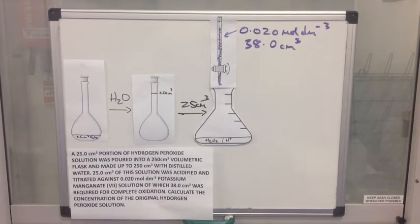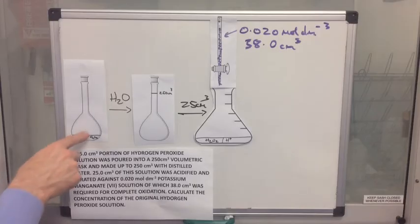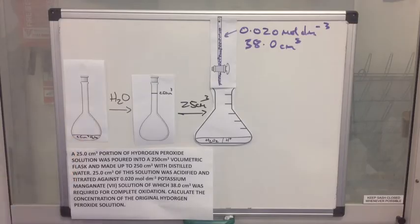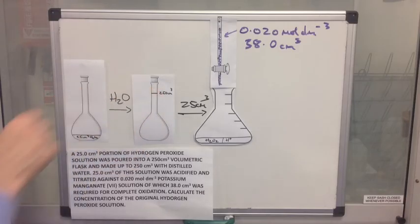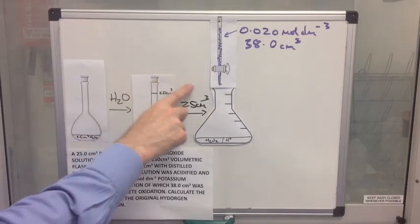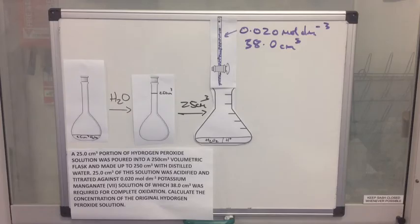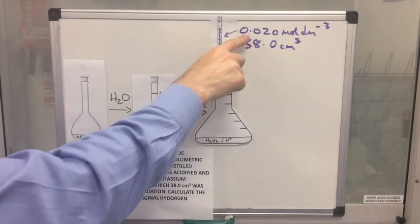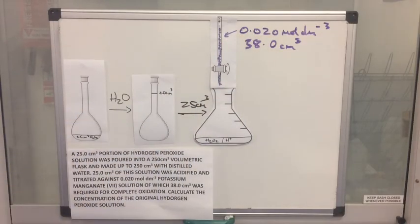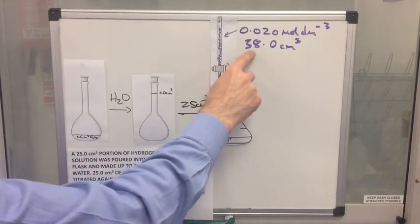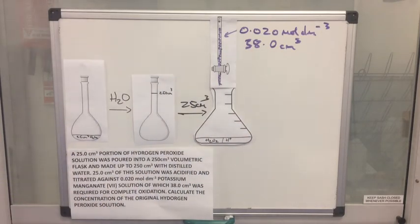For the visualisation: we have our original 25 cm³ of hydrogen peroxide solution, whose concentration we need to find. It's topped up to 250 cm³ with distilled water, then 25 cm³ is taken out — that's the scaling factor we need to remember. Some acid is added for the required acidic conditions, and the titration uses 0.02 mol/dm³ KMnO4 solution, with 38 cm³ needed for the reaction.